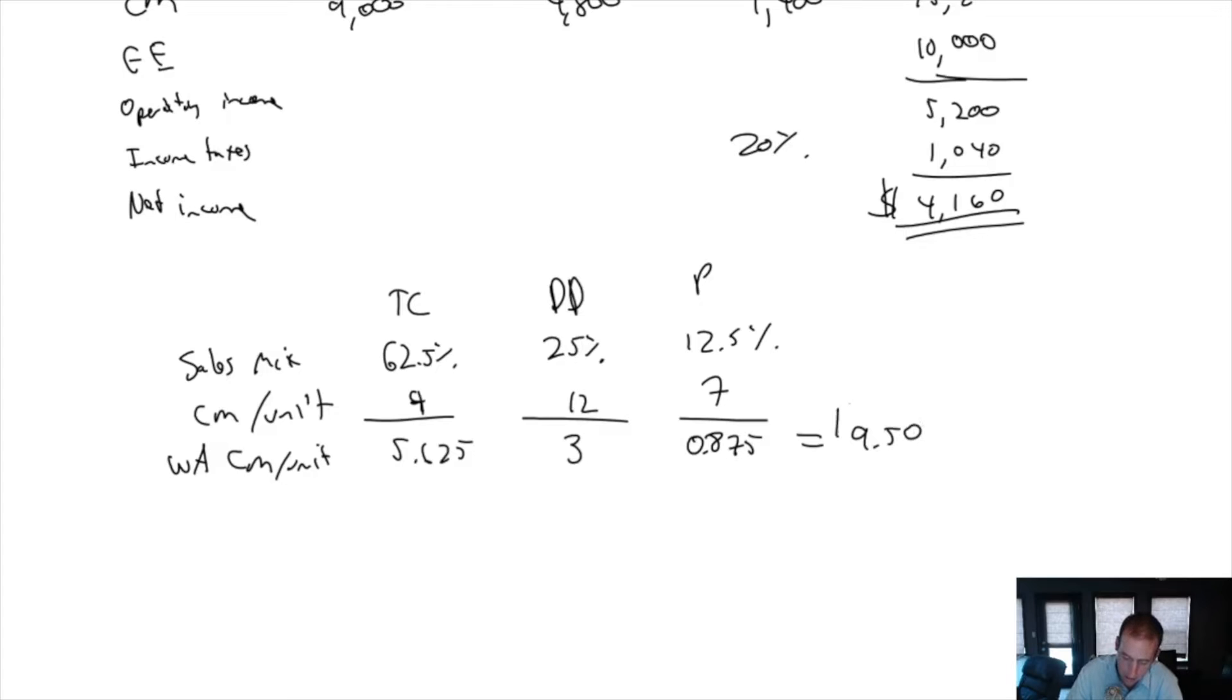So the average customer, after variable expenses, is making us $9.50. And that's our CM per unit.